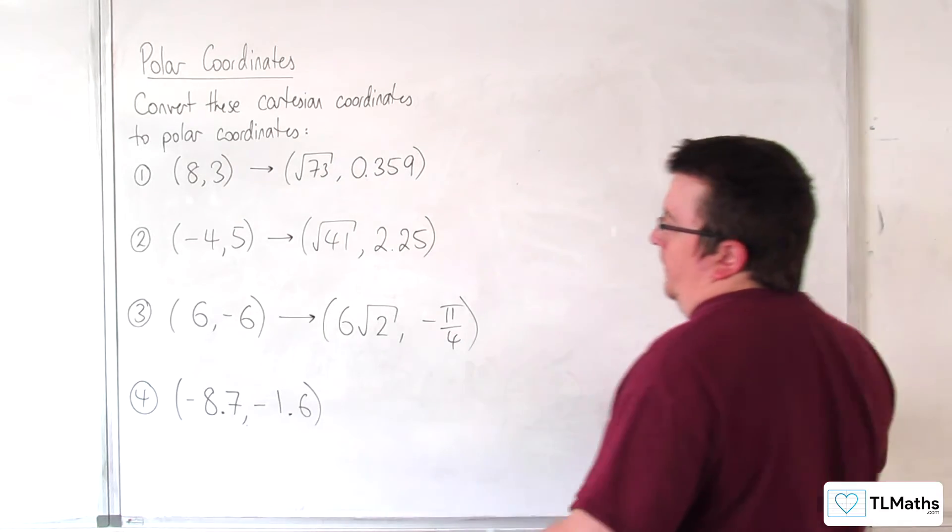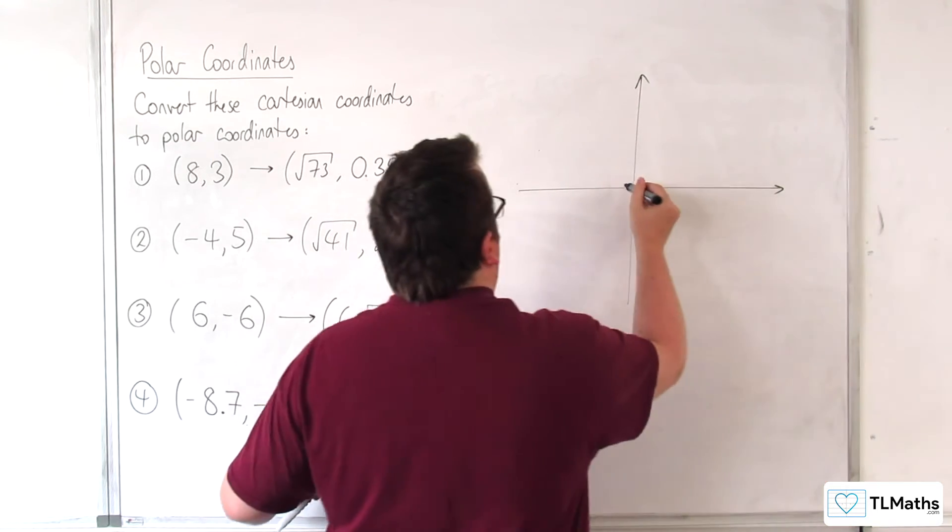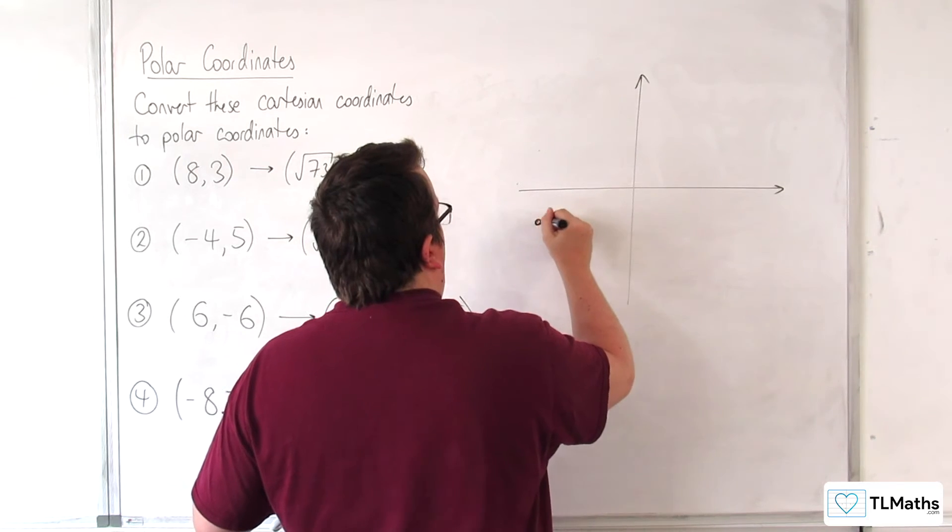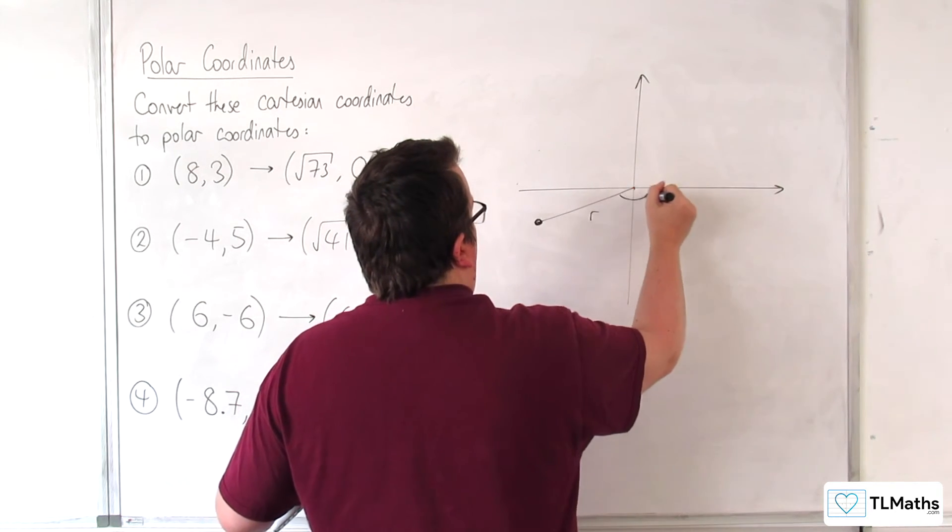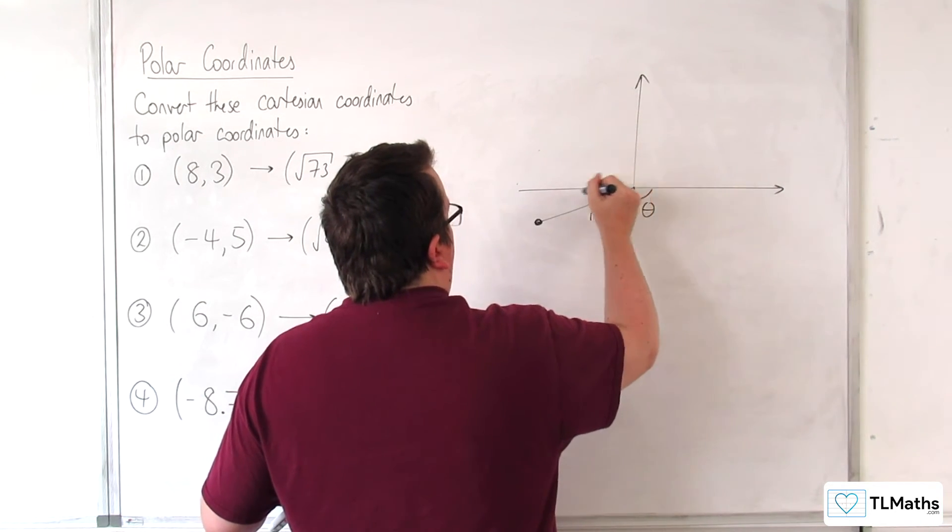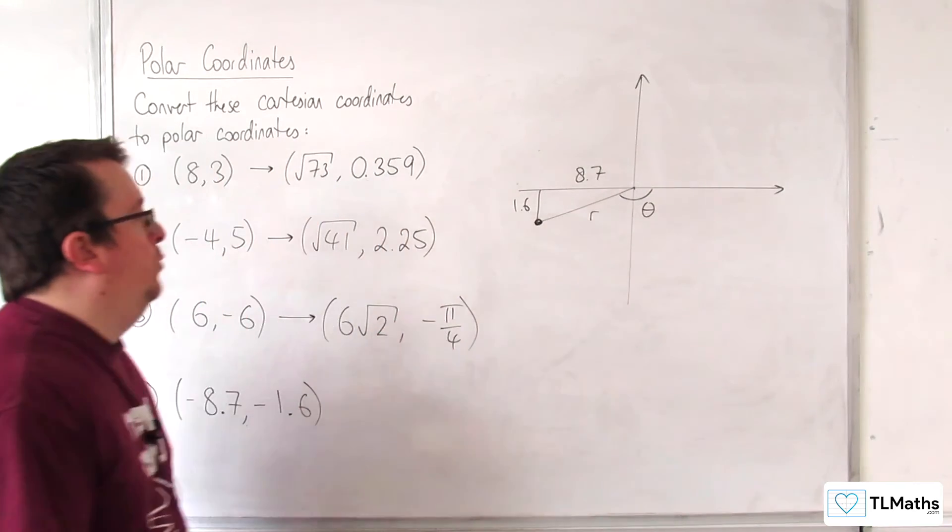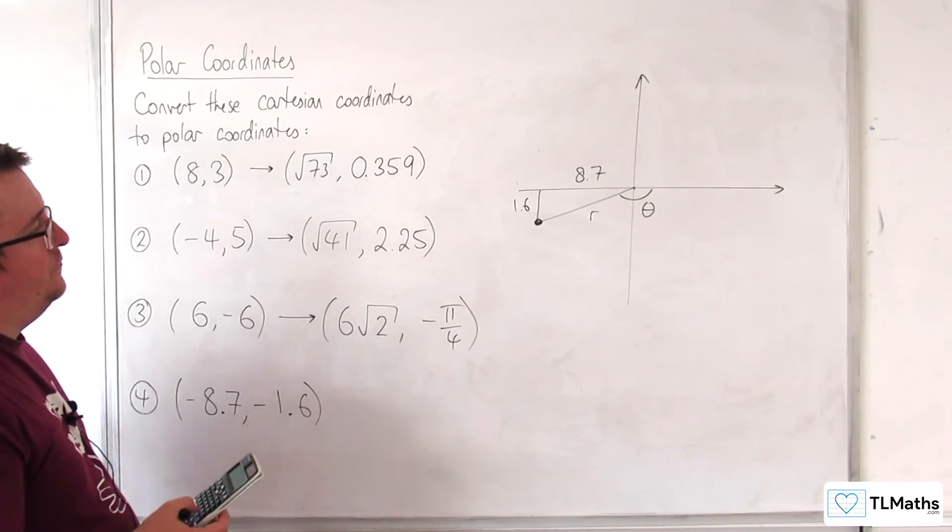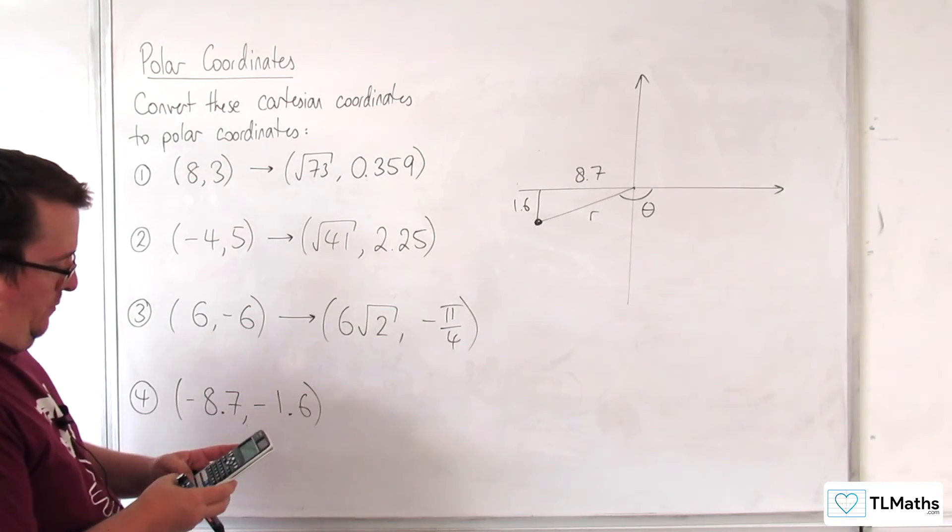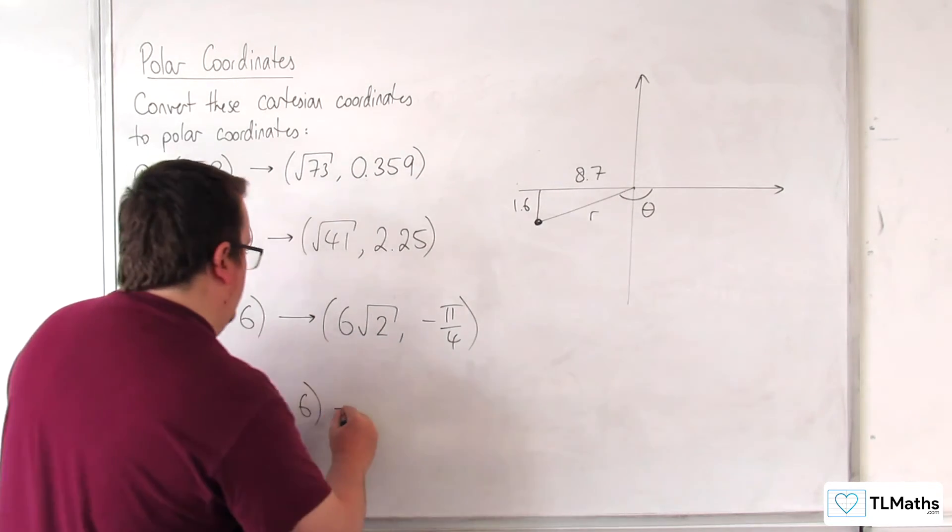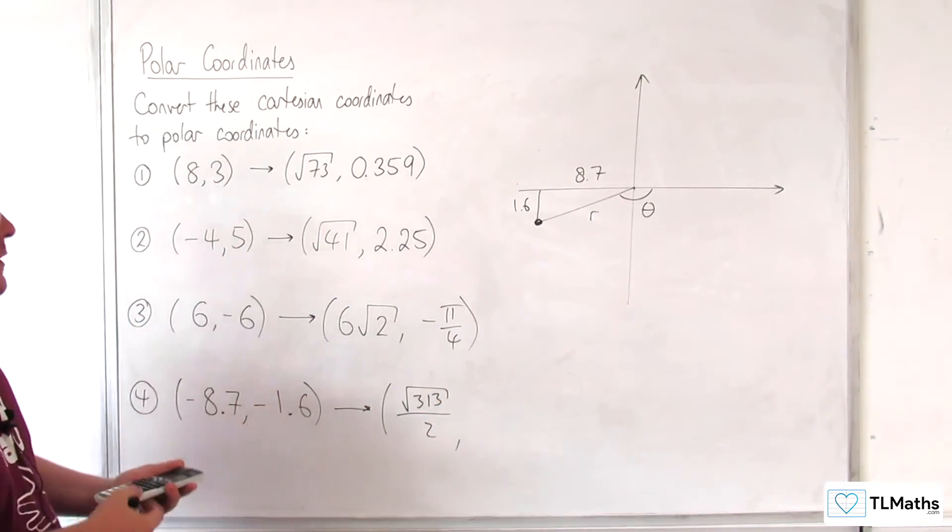Let's have a look at number 4. So minus 8.7, minus 1.6. Somewhere down here. Okay, there's R, and I'm going to want this theta here. So R is the square root of 8.7 squared plus 1.6 squared. And we get root 313 over 2.